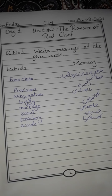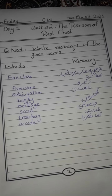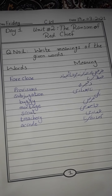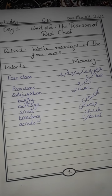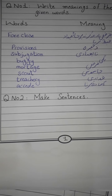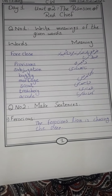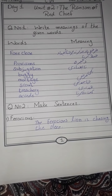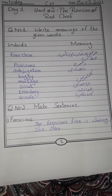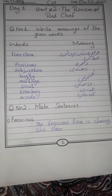Now we have question number two — make sentences. The first word is 'ferocious'. The meaning we have learned is zalim, vahshi, khun khar. The sentence is: 'The ferocious lion is chasing the deer.' In Urdu: khun khar shir hiren ka pichha kar raha hai.